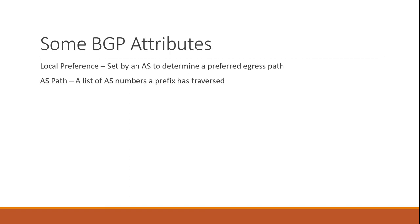AS path is probably the most important attribute for BGP. BGP is what's known as a path vector protocol — it doesn't just count hops numerically like a distance vector protocol. Instead, each prefix has a record of the path it traversed from an AS perspective. This attribute is a list of the autonomous system numbers a route has traversed, starting with the most recent AS number and ending with the originating AS number. The length of this attribute — the number of autonomous systems the prefix traversed — is used to determine which path is chosen. A shorter AS path will be chosen over a longer one.